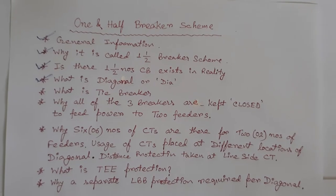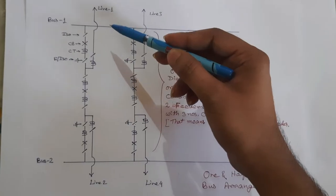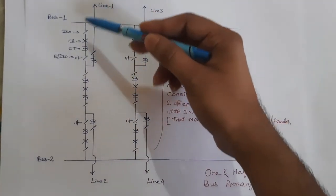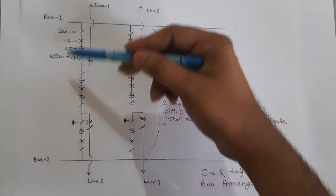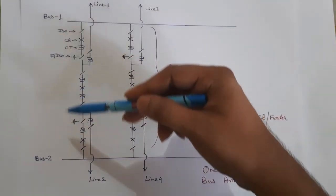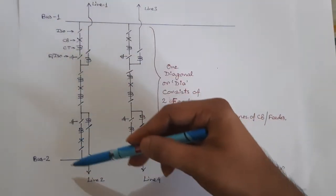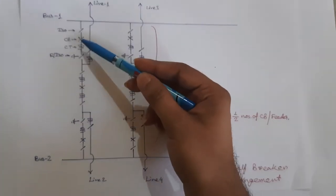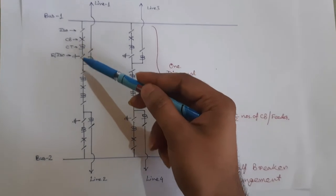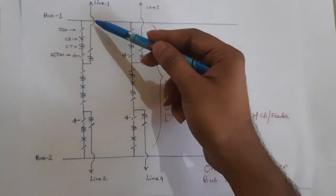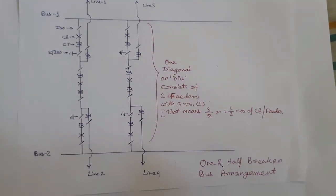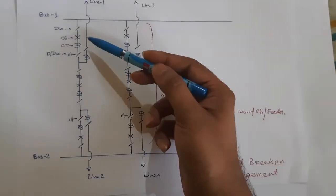Now, what is a diagonal or dia? In the one and half breaker scheme, two lines form one set, or two lines are paired together to form one diagonal. In each diagonal, there are several equipments like circuit breakers, CTs, and isolators. In each diagonal, there are three circuit breakers.